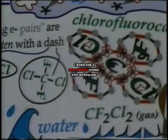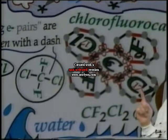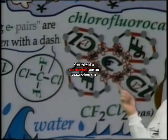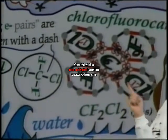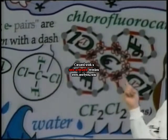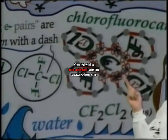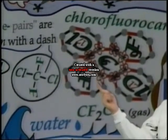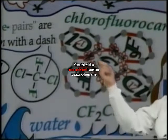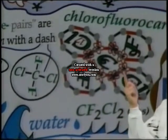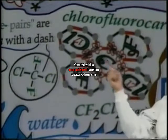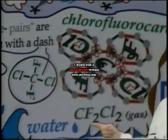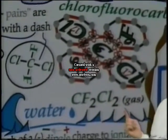Another example of covalent bonding: carbon, in the middle of the table, has four valence electrons and needs four more. Chlorine, needing one more electron, shares with one of carbon's vacancies. Fluorine, needing one more for its octet, shares with another vacancy. Alternating fluorine and chlorine atoms around the carbon gives everybody their octet, forming a chlorofluorocarbon known as CF2Cl2 as a gas.